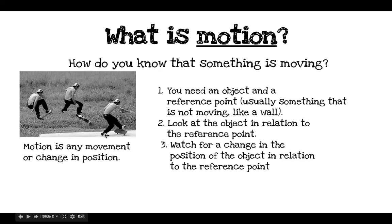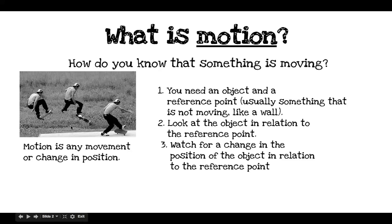The first thing that you need is a reference point and an object. Our object is the skateboarder, and our reference point is going to be the cement slab that he is landing on. Your reference point is usually going to be something that's not moving, like a wall.